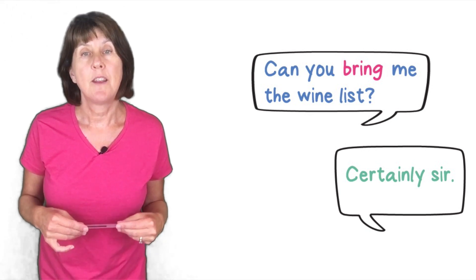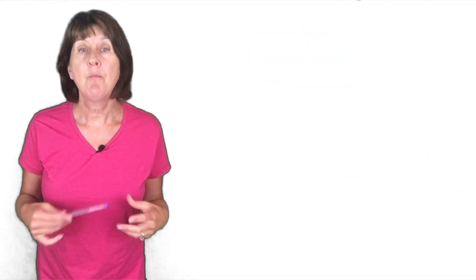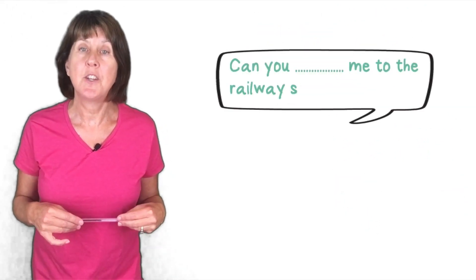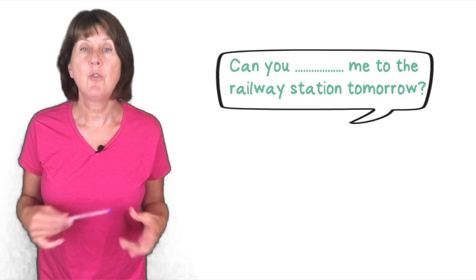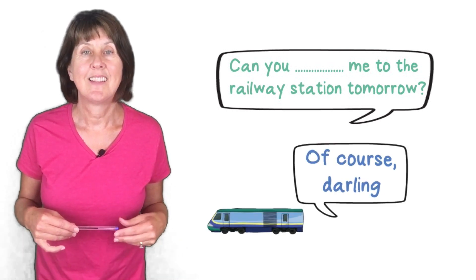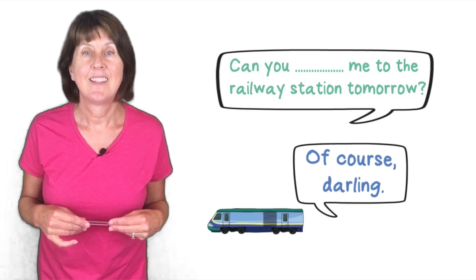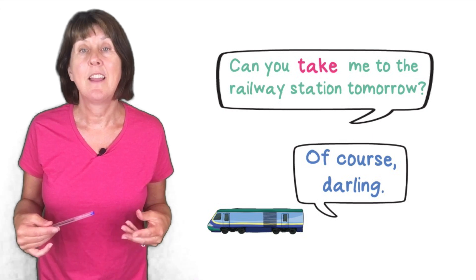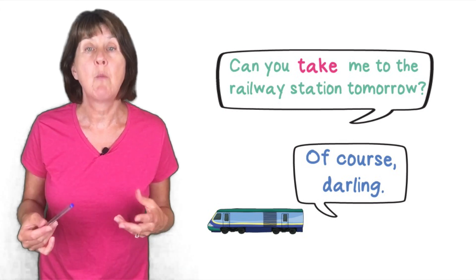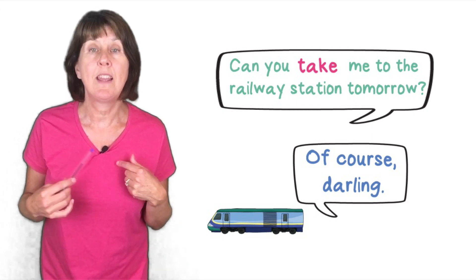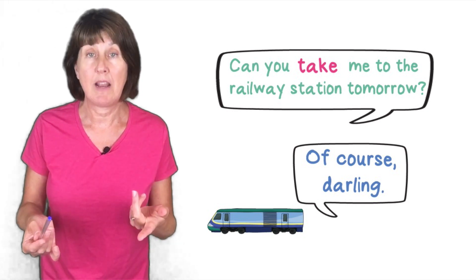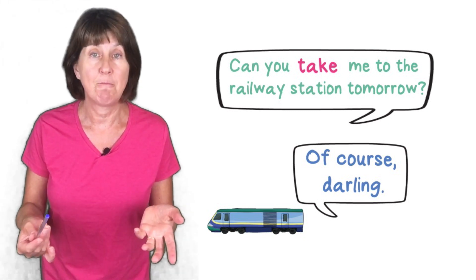Number 2: 'Can you __ me to the railway station tomorrow?' Mum: 'Of course darling.' The answer is take. The movement is away from where both the speaker and the listener are now, to a different place — the station.